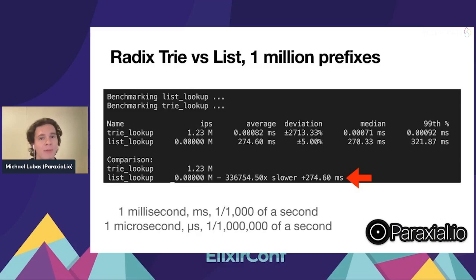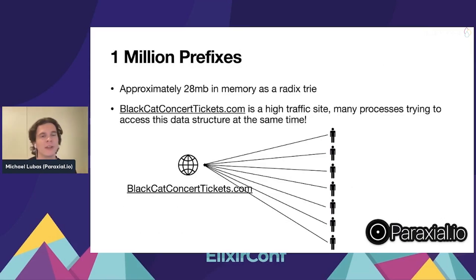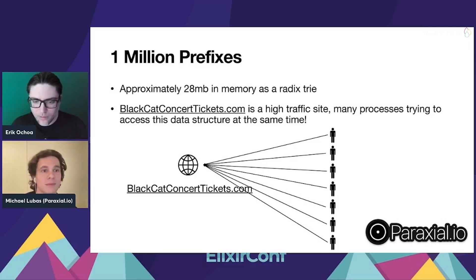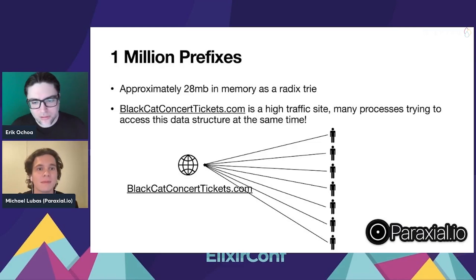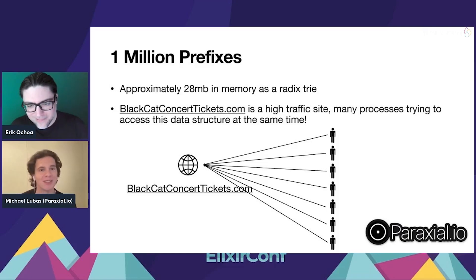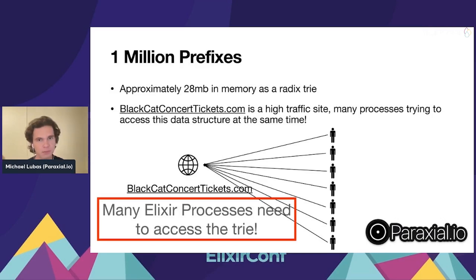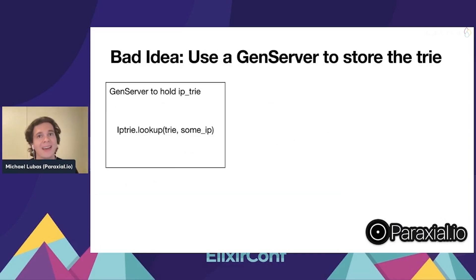Now we have our million prefixes in this big 28-megabyte data structure. It's a high-traffic site with many people wanting to buy concert tickets, so many Elixir processes need to access the trie. The first tool people may reach for is a gen server where you store the trie, handle lookup messages, and reply. But there's a cost — processing messages introduces a bottleneck where all connections go through this single gen server and performance degrades.